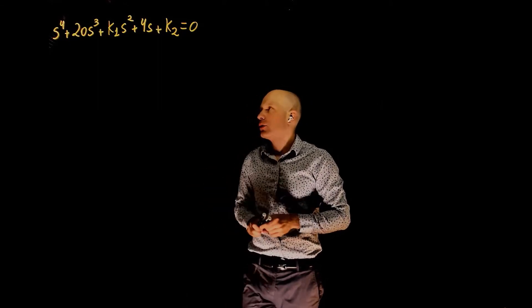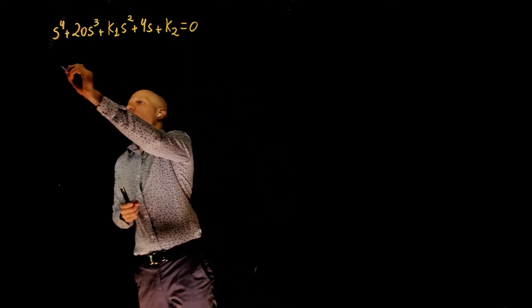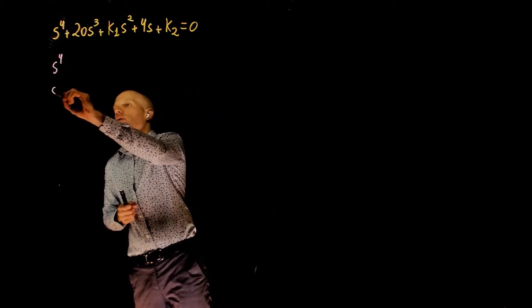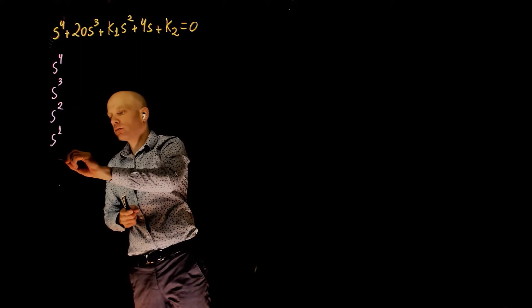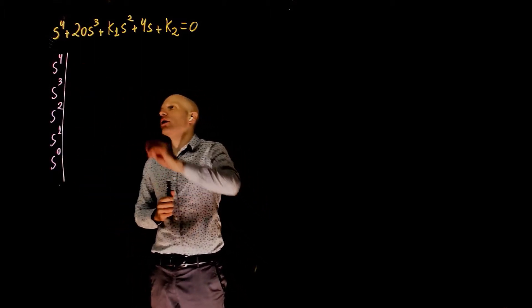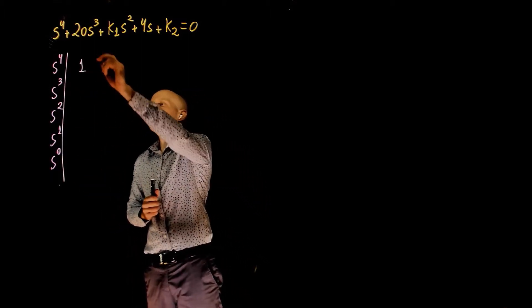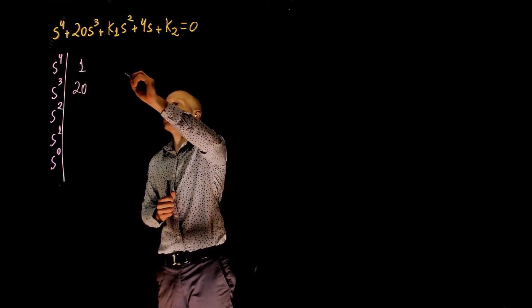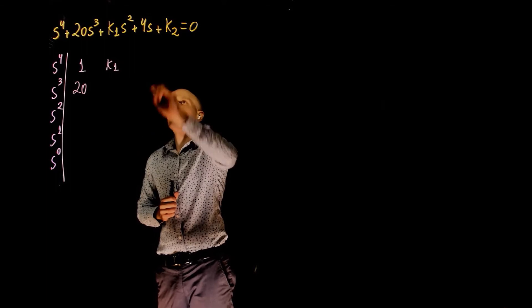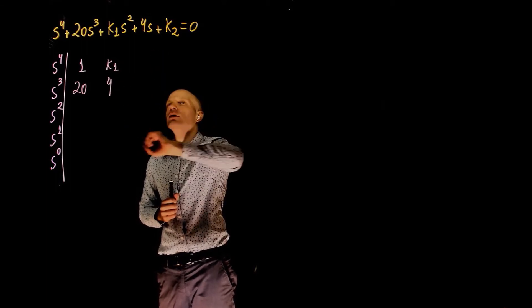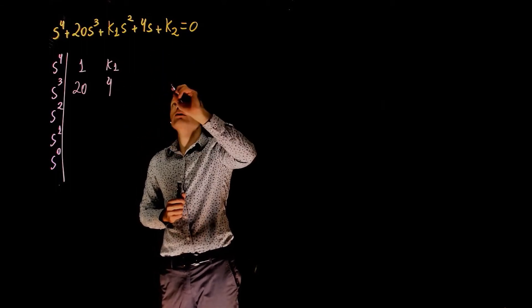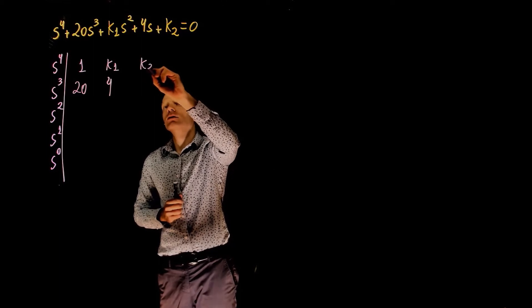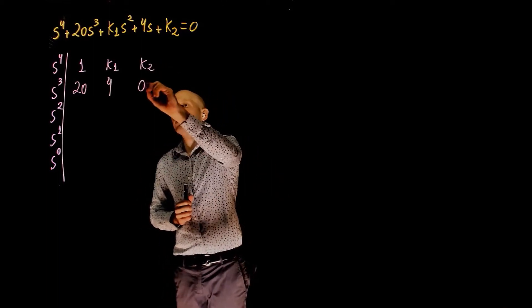We can prepare the Routh array. This is a fourth-order polynomial. We start with s to the power of 4, all the way to s to the power of 0. The first coefficient of s4 is 1, the coefficient of s3 is 20, coefficient of s2 is k1, coefficient of s is 4, coefficient of s0 is k2, and you can now complete the array with 0.